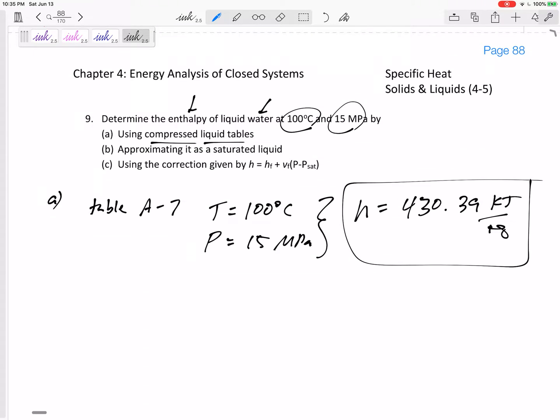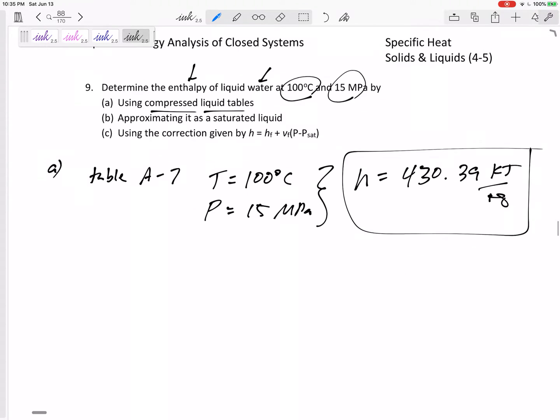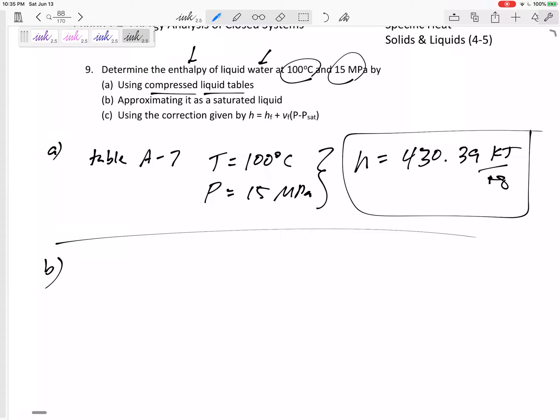So this is specific enthalpy. I don't think there would be a way to find the total enthalpy because we don't have the mass. We don't have enough information. We don't have the volume. Maybe with volume and specific volume we could get the mass, but we weren't told the volume. So let's leave that in specific enthalpy.